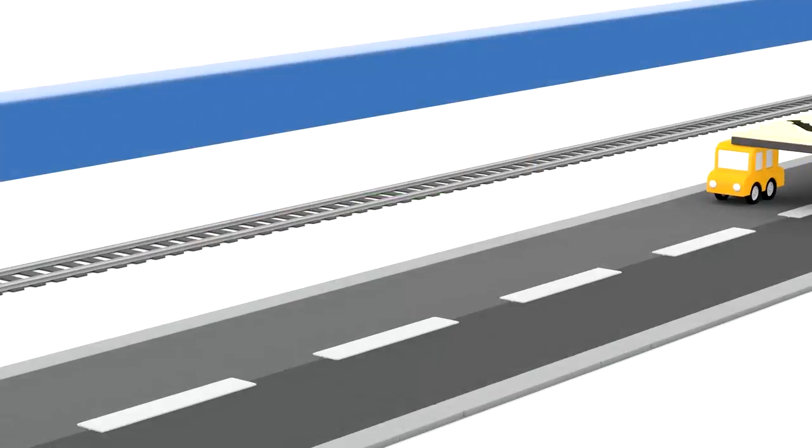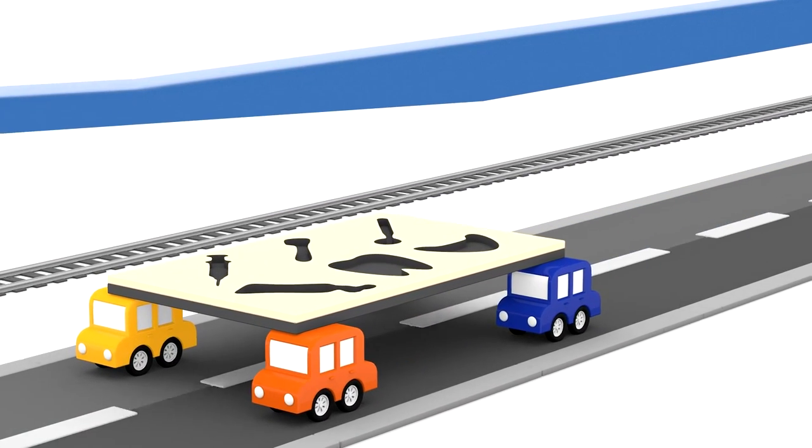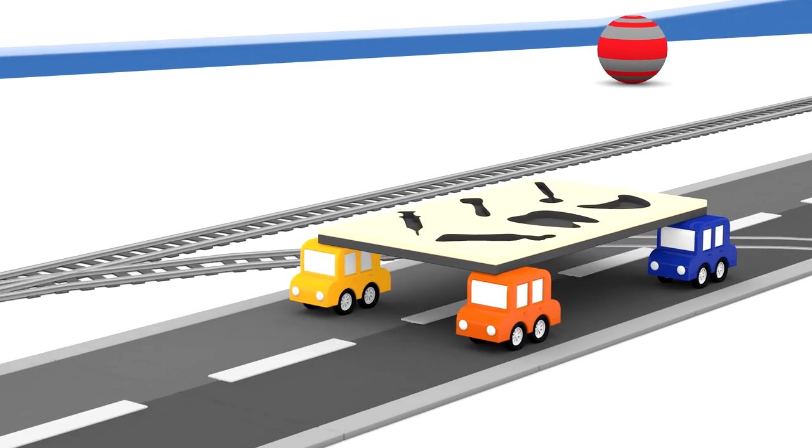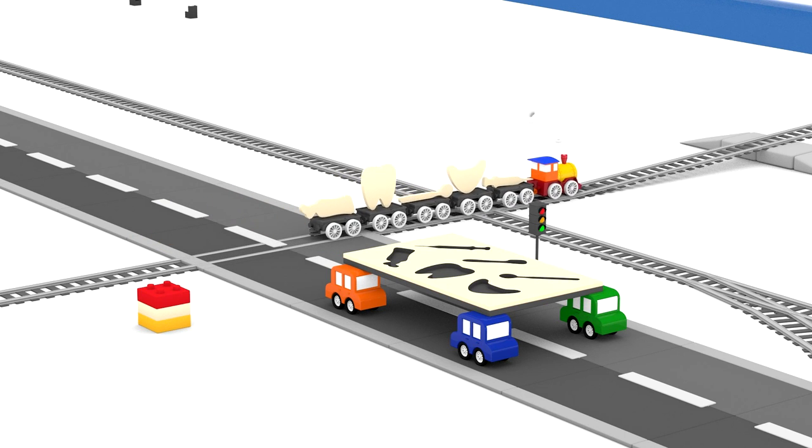And here come the four color cars again. They're carrying a very new jigsaw puzzle board. Hey cars, it's a red traffic light. You must stop. Look at the train above them.